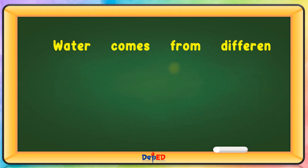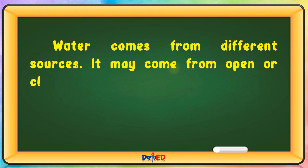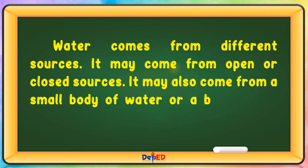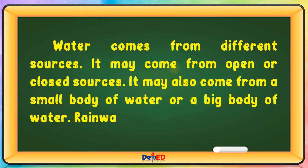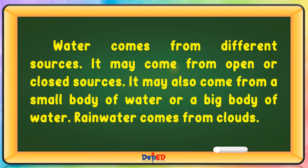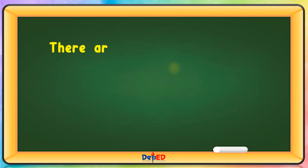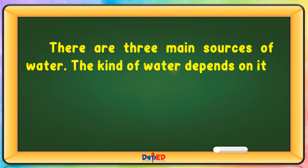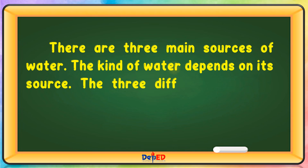Water comes from different sources. It may come from open or closed sources. It may also come from a small body of water or a big body of water. Rainwater comes from clouds. There are three main sources of water. The kind of water depends on its source.